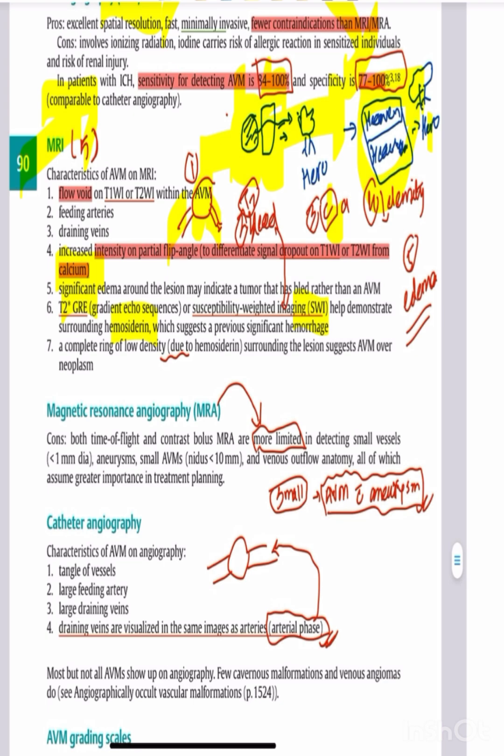Complete ring of low signal intensity on MRI helps differentiate calcium. Using different flip angles, calcium appears differently than blood products. Low signal density helps distinguish the lesion as AVM versus neoplasm.